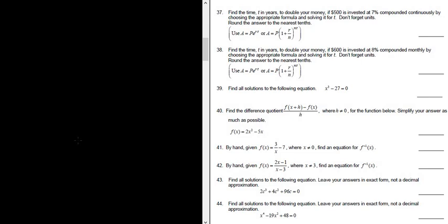Okay, so the key word is compounded monthly. So whenever they give us a time period for the compounding, we know it's going to be A equals P parentheses 1 plus r over n to the nt.